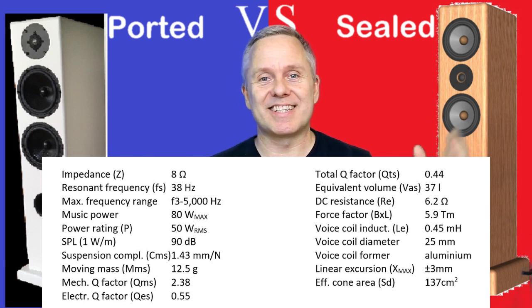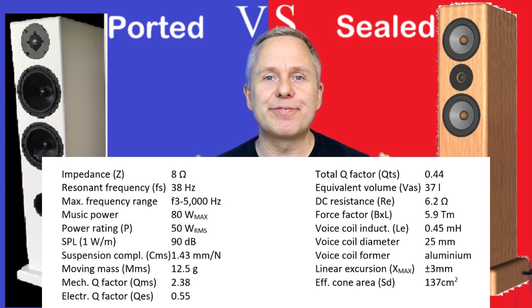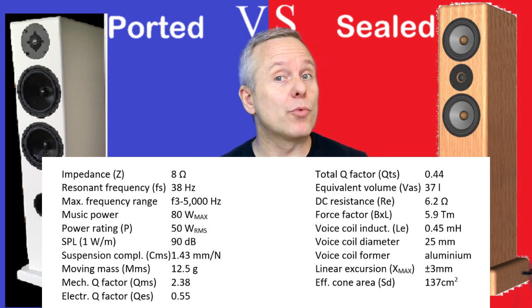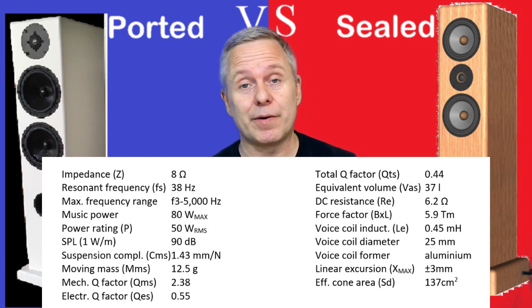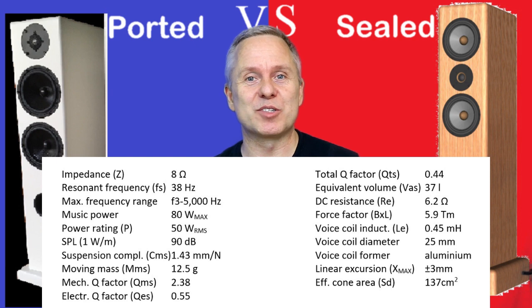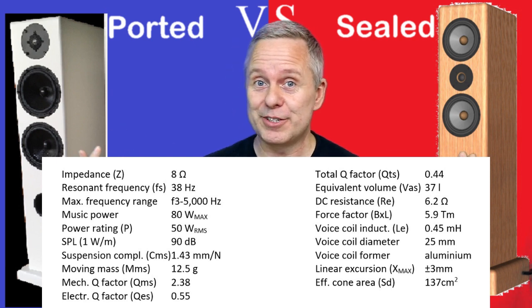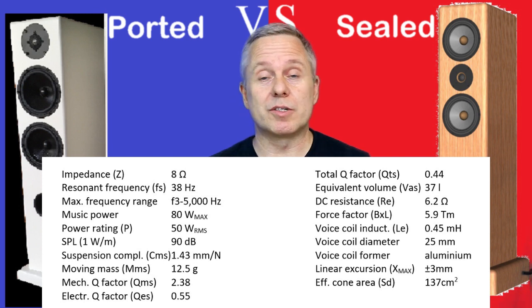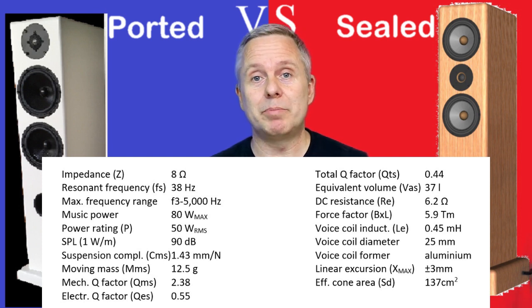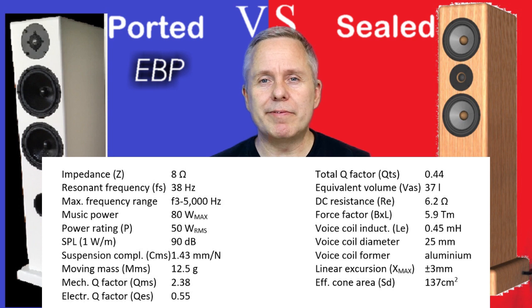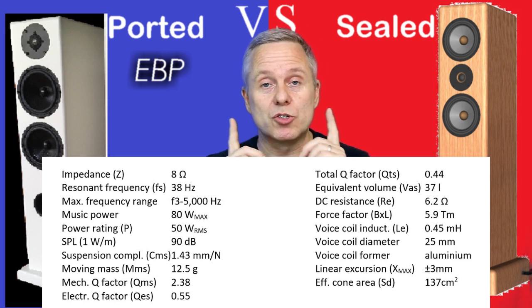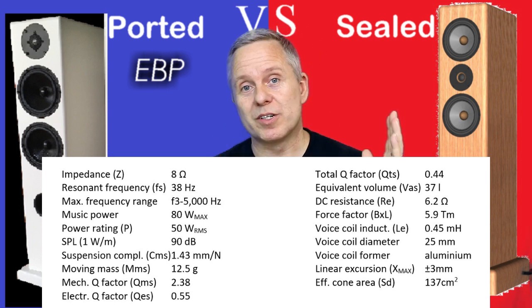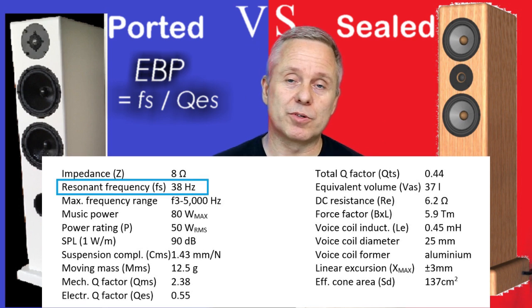Let's just figure out which system — closed or vented — will allow a woofer to really flourish. This is assessed using what's called the Efficiency Bandwidth Product, used simply as the EBP value. You can calculate the EBP from just two Thiele/Small parameters.